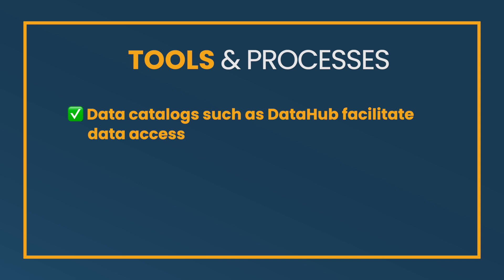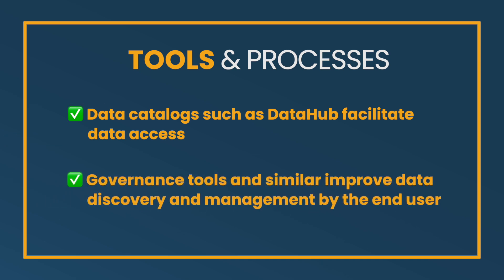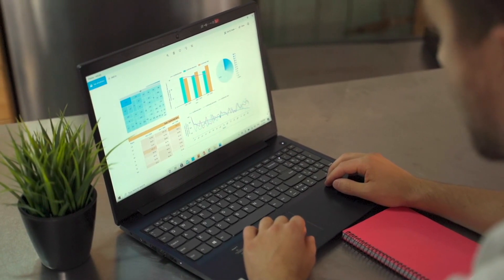You also need tools and processes for governance and general data management. This includes data catalogs like Data Hub, which make it easier for people to see what data actually exists. At Facebook, this was a key part of my day-to-day — instead of spending hours setting up meetings to understand data, I could go to the internal data catalog, look up topics or entities I cared about, click into them to see where they came from, trace back through pipelines, and see what dashboards relied on them.